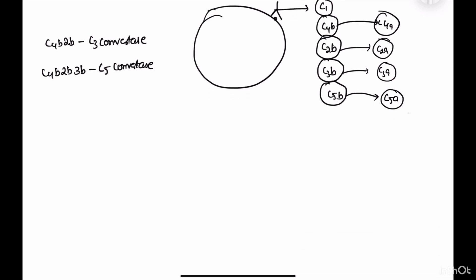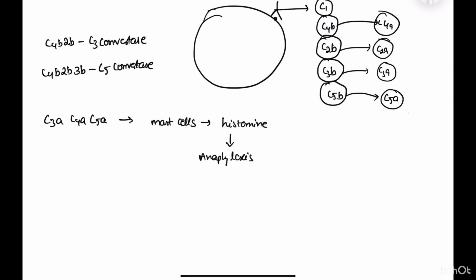C3a, C4a, and C5a act as anaphylatoxins that stimulate mast cells, causing them to degranulate and release histamine, which causes anaphylaxis. So the complement system plays a major role in anaphylaxis.